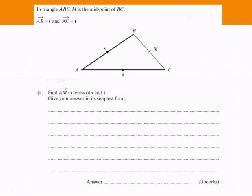Here is an exam question about vectors. In triangle ABC, M is the midpoint of BC, so M here cuts line BC in half. AB equals S, so the vector that goes from A to B is called S, and the vector that goes from A to C is called T, AC equals T.